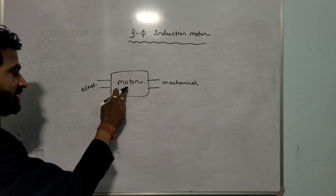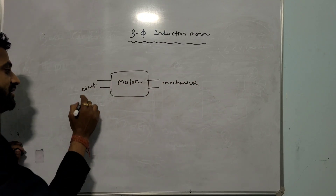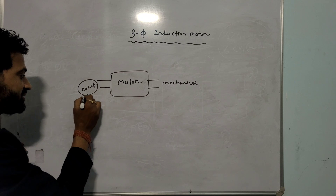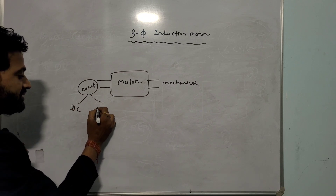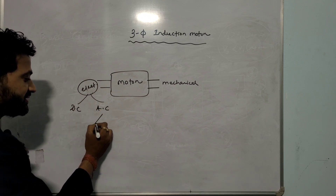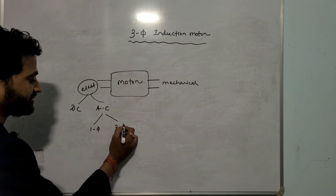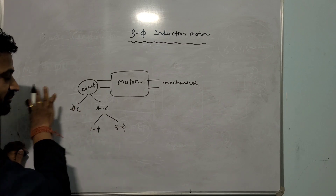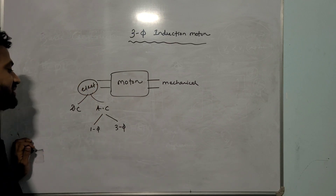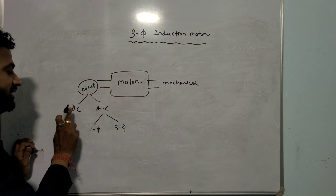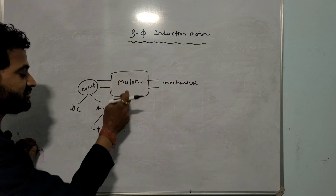Electrical energy is of two types: one is DC and the other is AC. Again, AC is of two types: single-phase and 3-phase. Based on the input power supply, we can classify motors in various categories. If the input is DC, then that is called a DC motor. If the input is AC, that is called an AC motor.